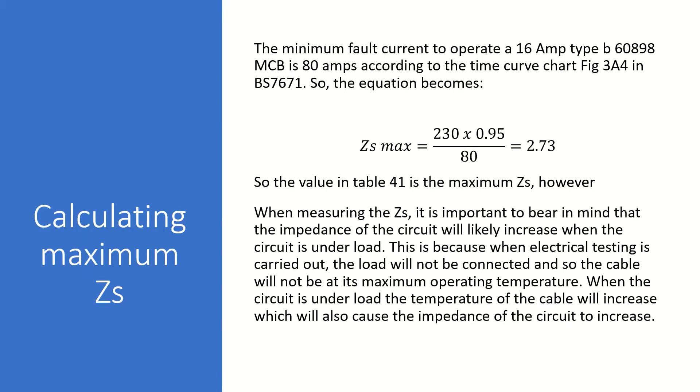So here we have an example of how the maximum Zs is calculated for a 16-amp type B60898 MCB. The value for Ia is 80 amps according to the time curve chart, figure 3A4 in BS7671. So the equation becomes Zs max equals 230 multiplied by 0.95 divided by 80, which gives us a result of 2.73 ohms, which is the same as the figure in table 41.3 in the wiring regulations. So the value in table 41 is the maximum Zs.